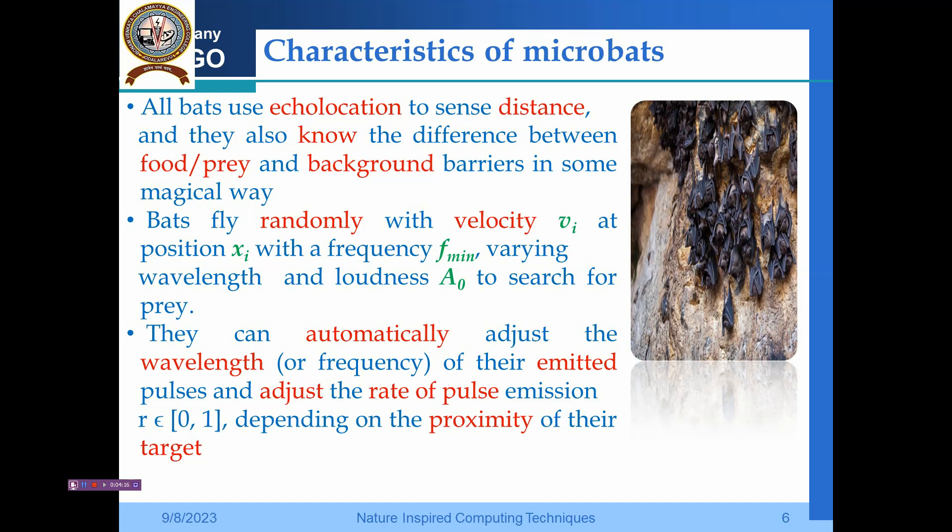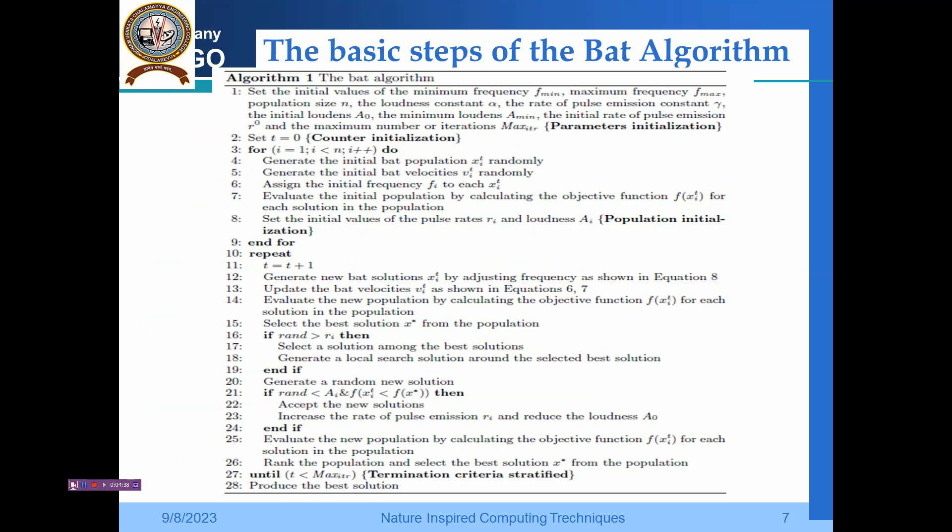They can automatically adjust the wavelength of their emitted pulses and also adjust the rate of pulse emission. This pulse rate is represented as r (small r), which belongs to [0,1], depending on the proximity of their target. The closer they are, they adjust accordingly.